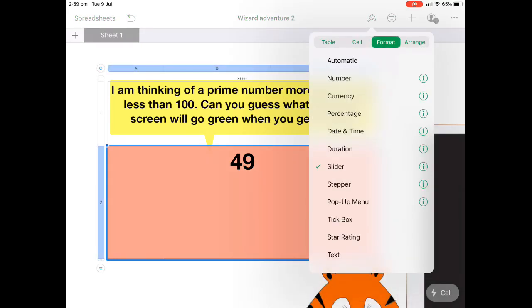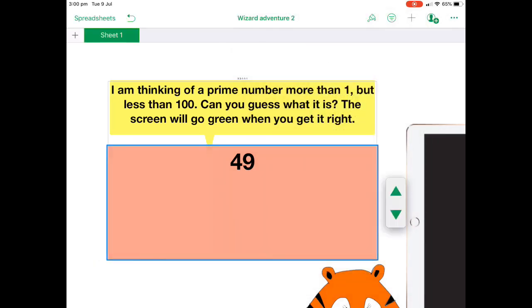Now, when I tap on the cell and I go to format, can you see how it's on slider? If I change that to stepper, you'll see that when I tap on the cell, I've got a little stepper up and down arrows.